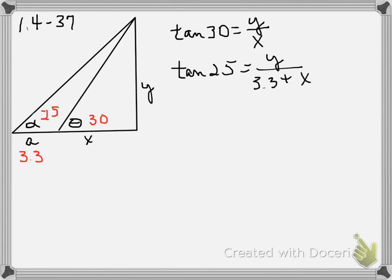Now we have two equations with two unknowns. If we solve one equation for one of the unknowns and substitute it into the other equation, we can find the values of both. What we really need to know is y, so we're going to begin with the one that looks the most complicated.